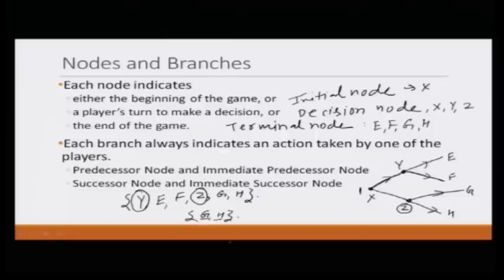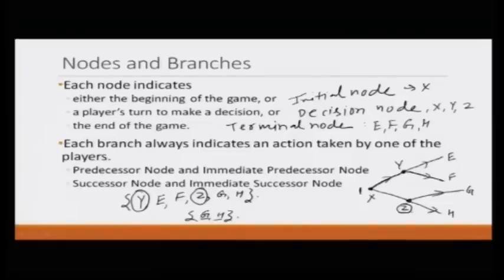We can also define a predecessor node: if node a is a successor node of node b, then node b is a predecessor node of node a. For example, x is the predecessor node of z since we can reach z from x. Similarly, we define the immediate predecessor node.